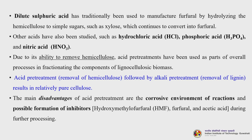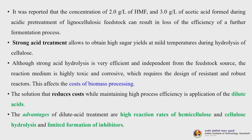The corrosive environment means you need a sophisticated reactor of a particular material to deal with it - glass is better but cannot be made in very big sizes, which adds extra cost. It was reported that concentrations of 2 g/L of HMF and 3 g/L of acetic acid formed during acidic pretreatment can result in loss of efficiency of the further fermentation process, because these compounds become toxic for fermentation to proceed.